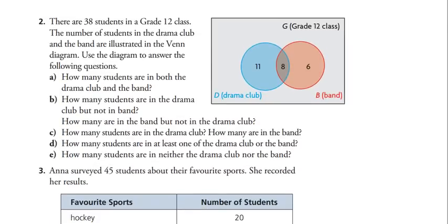There are 38 students in a grade 12 class. The number of students in the drama club and the band are illustrated in a Venn diagram. How many students are in both the drama club and the band? Eight. How many are in the drama club but not in the band? Eleven. How many are in the band but not in the drama club? Six.